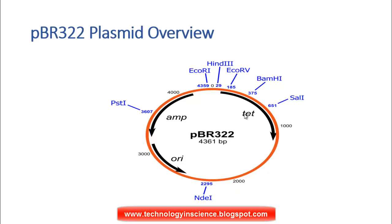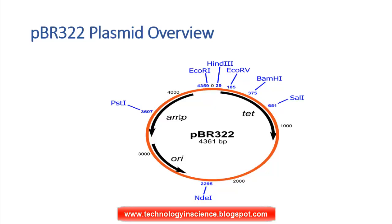The role of the tetracycline resistance gene and the ampicillin resistance gene is that bacteria carrying this plasmid will be able to grow on media containing ampicillin or tetracycline. The ampicillin resistance gene produces the enzyme beta-lactamase, which cleaves and degrades ampicillin, allowing the bacteria to survive on that selective media.